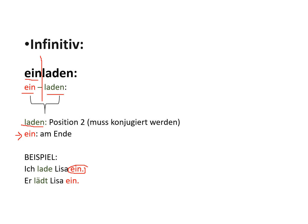So once again I repeat for you: we took the word 'einladen' as an example. Einladen means 'to invite.' You divide the verb right after the prefix, which leaves you with 'ein' and 'laden.' The 'laden' needs to be conjugated according to the personal pronoun or the speaker of the sentence. In the first example we have 'ich,' that's why it's 'lade' — 'Ich lade Lisa ein,' meaning 'I am inviting Lisa.' In the second sentence we have 'er,' that's why you say 'lädt' — 'Er lädt Lisa ein,' meaning 'He is inviting Lisa.' I hope you understood what I meant by separating the verb.